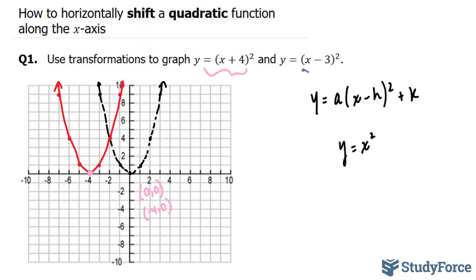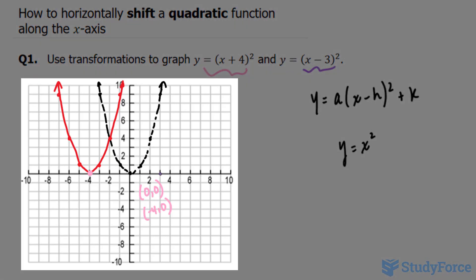Now in our next equation, we have minus 3. Remember what I said: if it's minus, it moves to the right, and if it's positive, it moves to the left. So in our case here, all of these points will shift to the right by 3. Our new vertex will be at (3, 0).